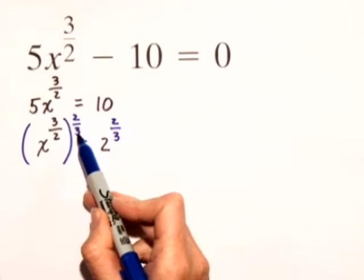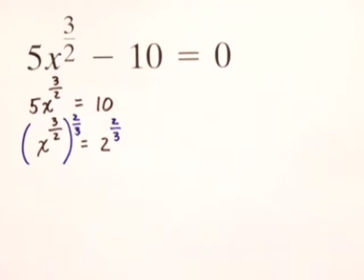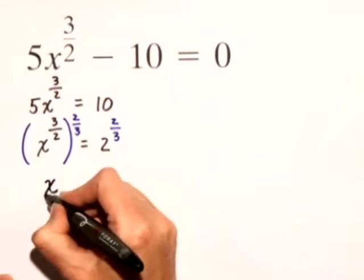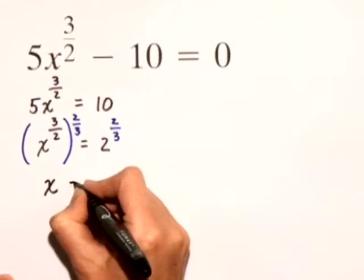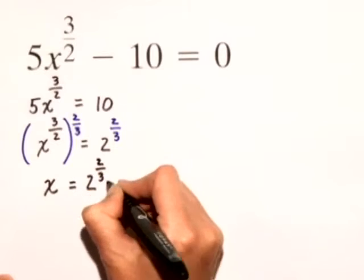3 halves times 2 thirds just gives us 1. So therefore, on the left hand side, we'll just have x to the 1st power, or x, is equal to 2 to the 2 thirds power.